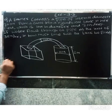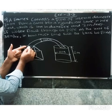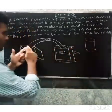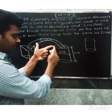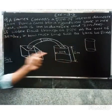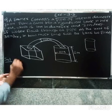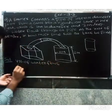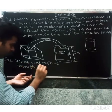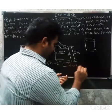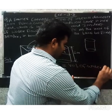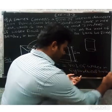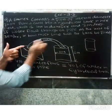So first, we consider the pipe. The volume of water that flows through the pipe is equal to the volume of water in the cylindrical tank. Water flows through the pipe equal to volume of water in cylindrical tank.